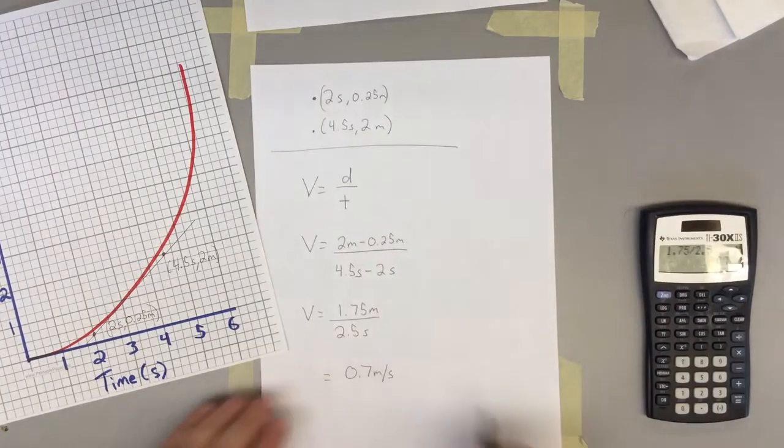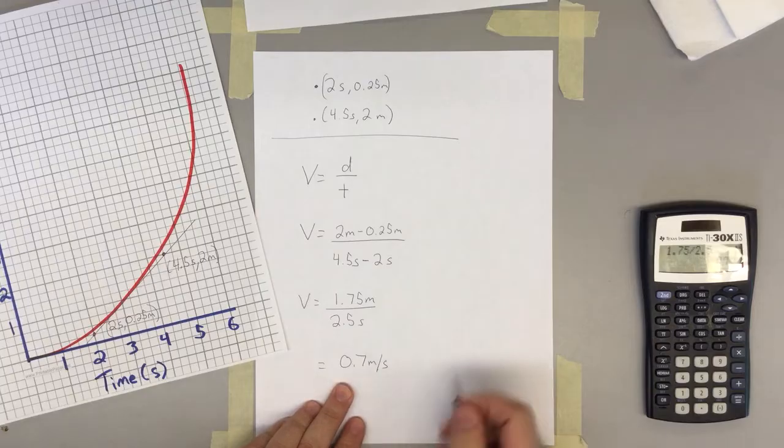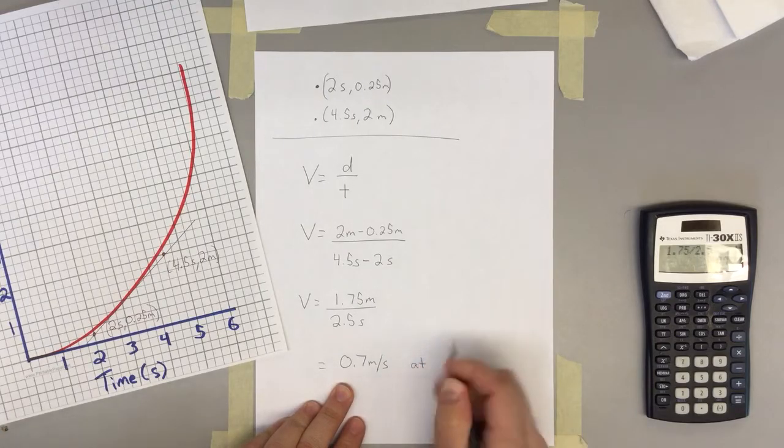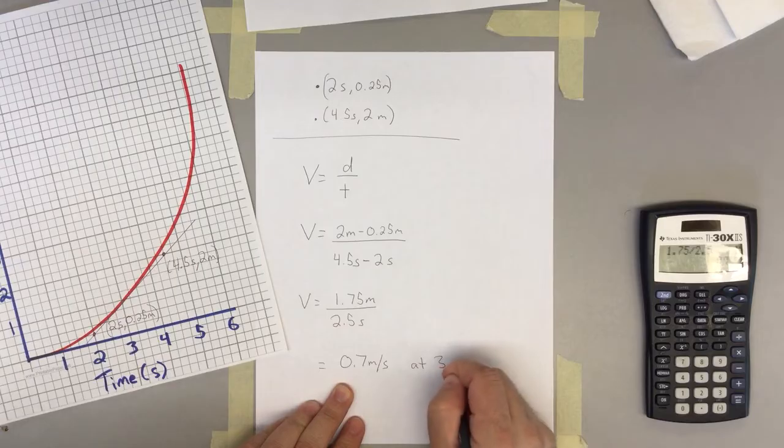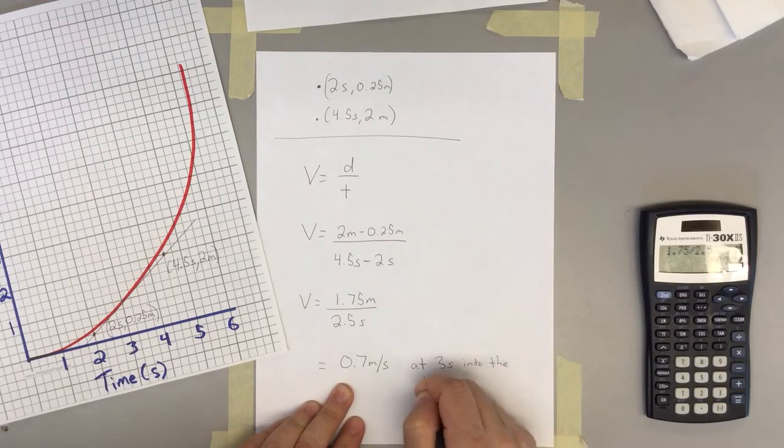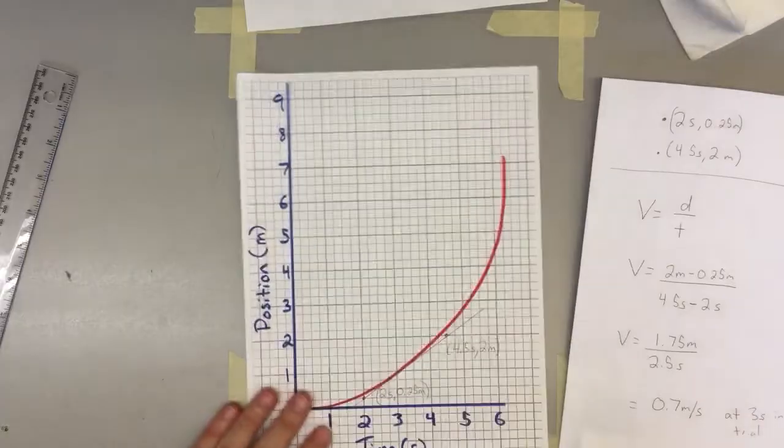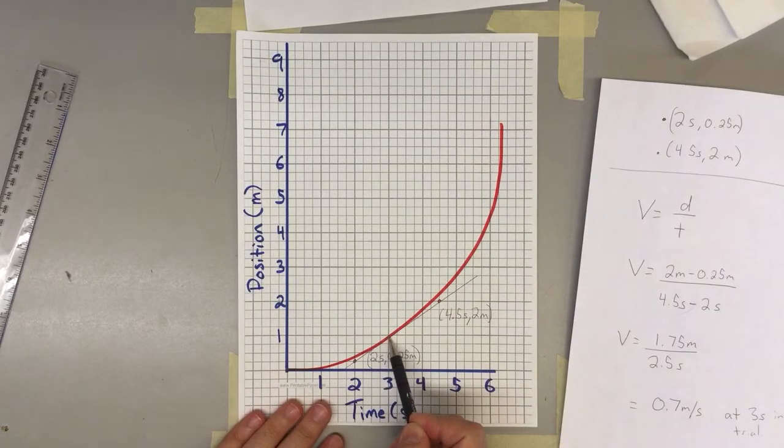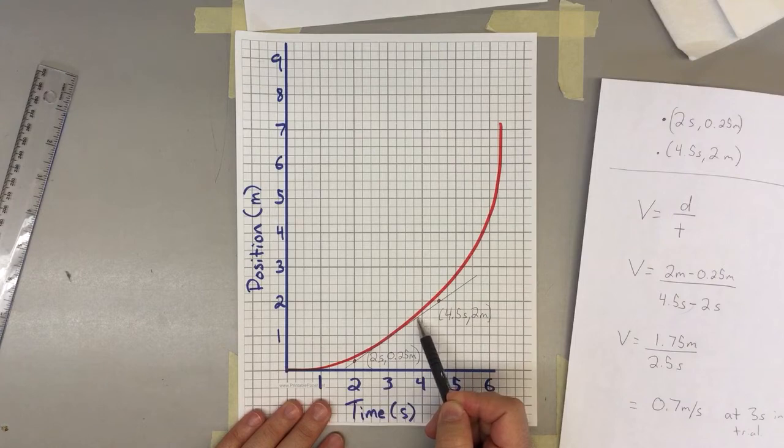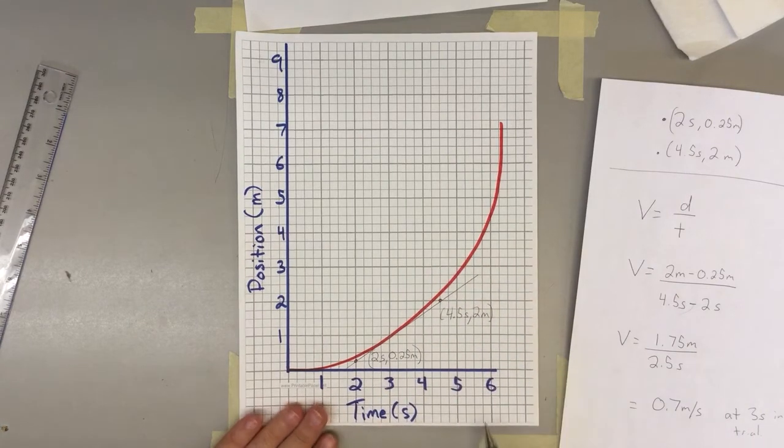You know that they're going to be traveling 0.7 meters per second at 3 seconds into the trial. I'm putting this just so it's super obvious that only at this point in the line were they traveling at 0.7 meters per second. Before that, they're going slower. After that, they're going faster.